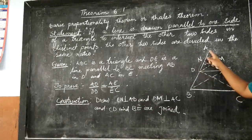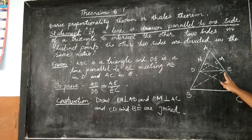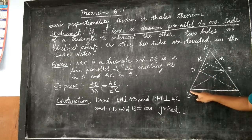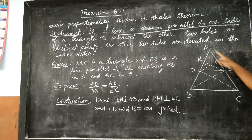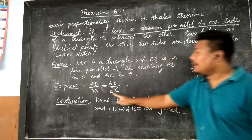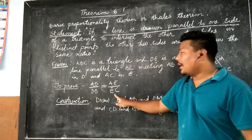The line DE cuts AB at D and cuts AC at E. So D divides AB into AD and DB, and E divides the line segment AC into AE and EC. We are going to prove that AD by DB is equal to AE by EC.